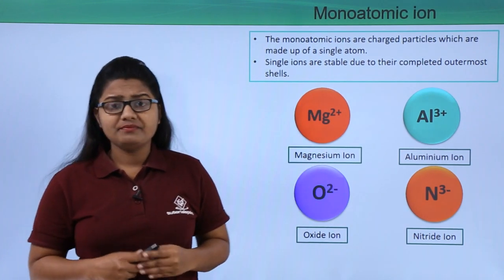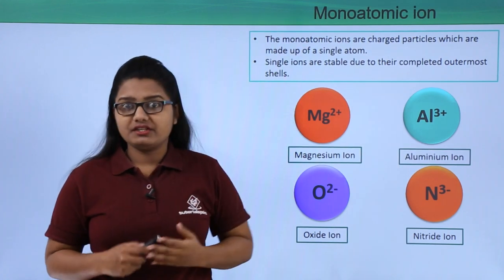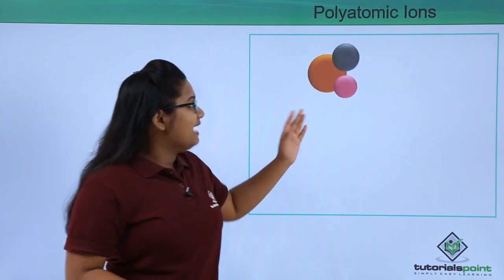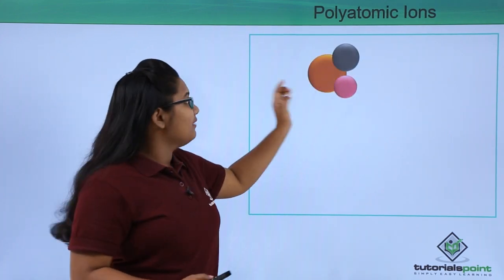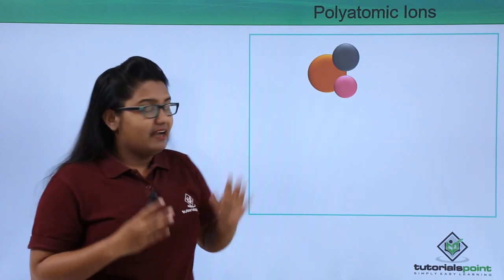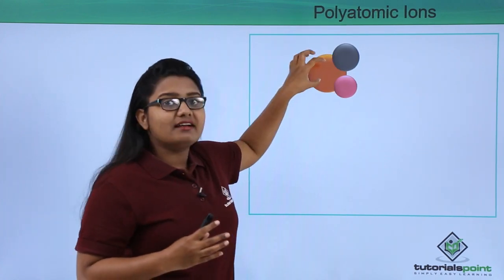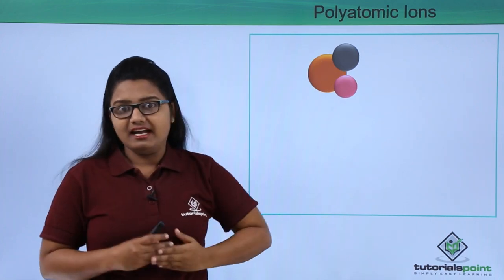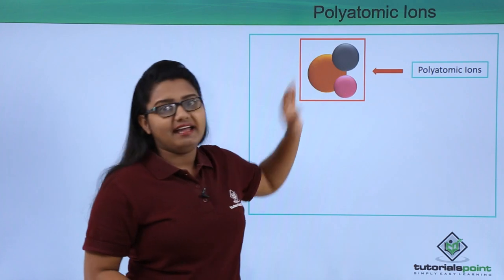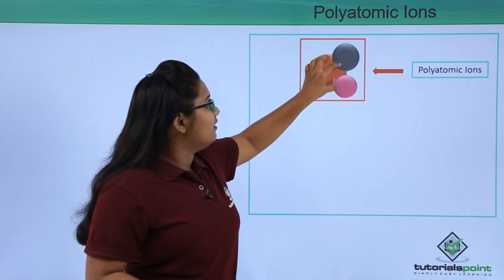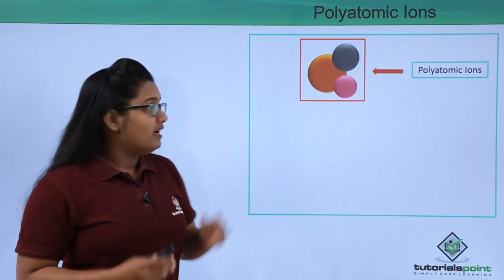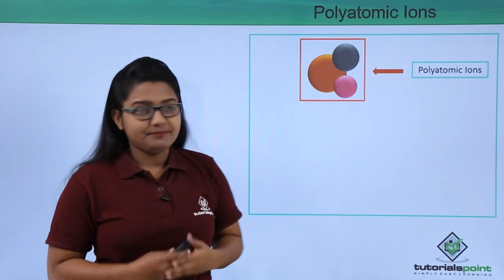This kind of stable structure can also be formed when many atoms come together and form a single unit. When this unit or club of atoms has a charge, it is called a polyatomic ion. Since this structure is made up of more than one atom, it is called polyatomic — where 'poly' stands for more than one or many atoms.